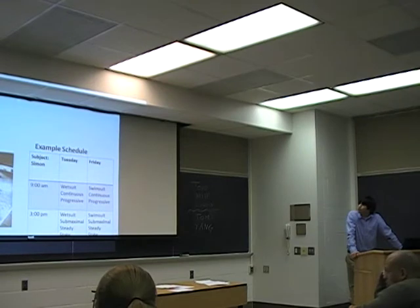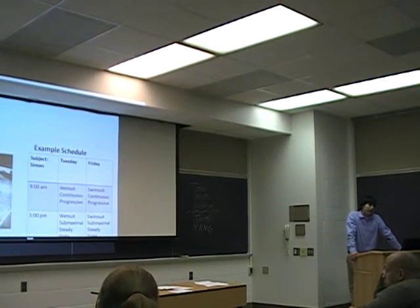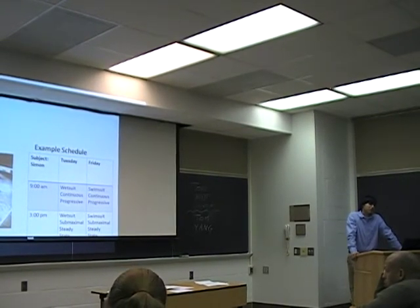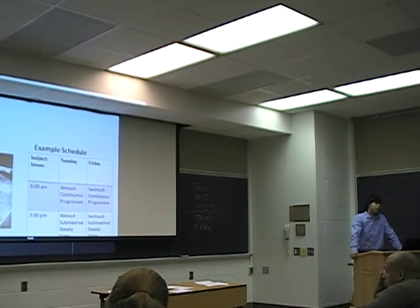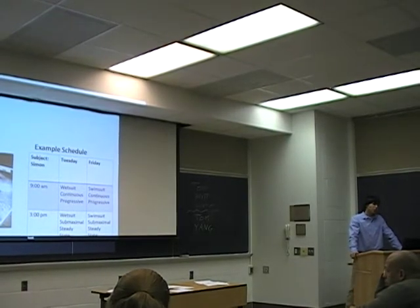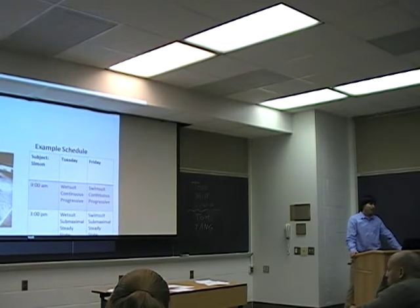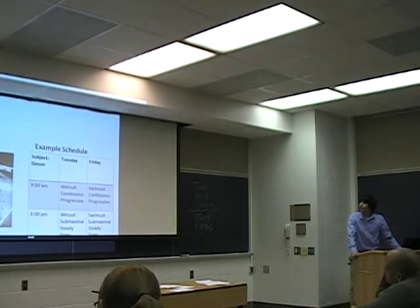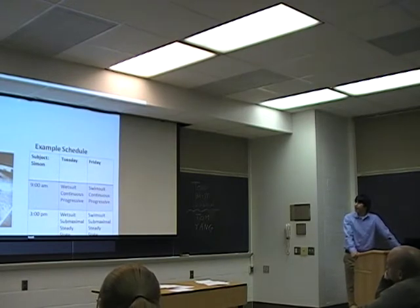An example here, you had two conditions. You had wearing the wetsuit and wearing the swimsuit. And then two tests were performed to test these. One continuous progressive test and one submaximal steady state test. And I'll describe these more in-depth in the next slide. But on the right is an example schedule of how this was conducted.